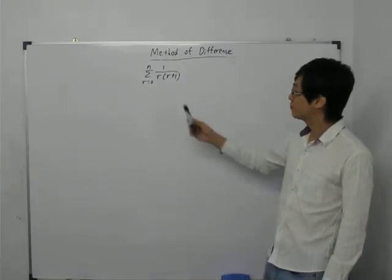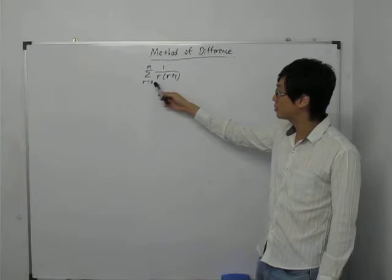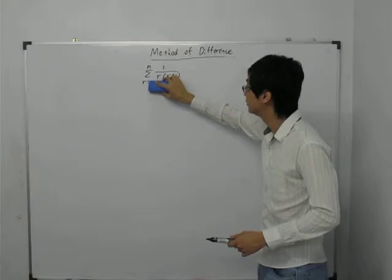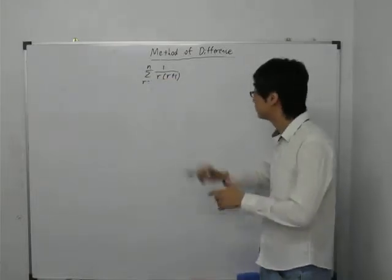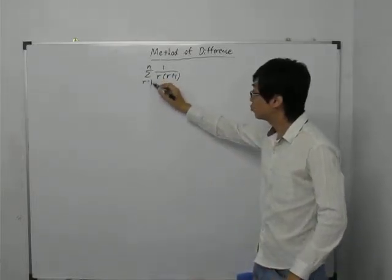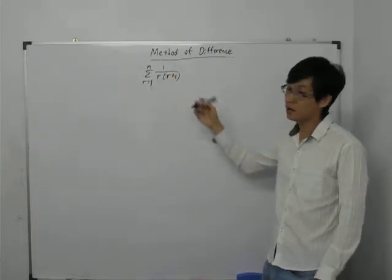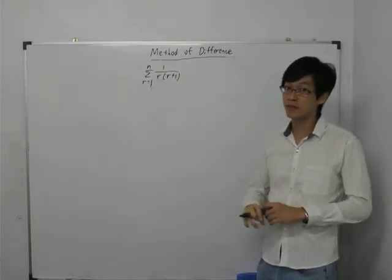In this example, you're supposed to sum from r equals 1 to r equals n, and you're supposed to sum this expression: 1 over r bracket r plus 1.